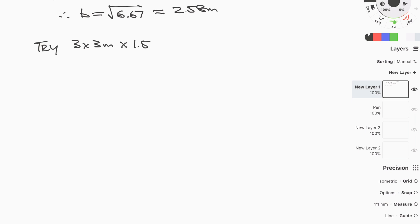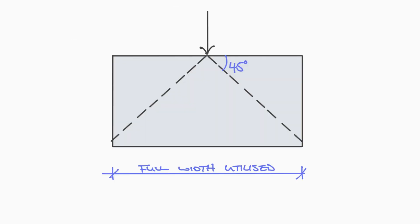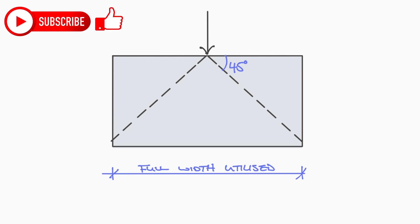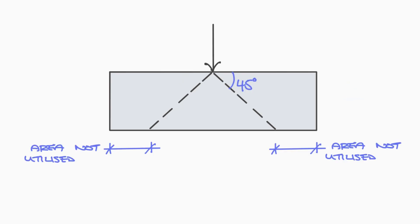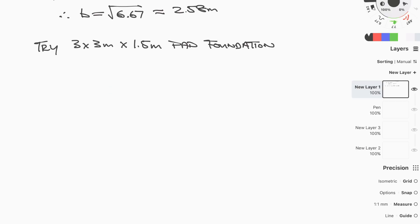We need to factor in the self-weight of the pad, so let's initially try 3 meters square. Since the bearing strata is 1.5 meters below ground, mass concrete pads are likely optimal. For a mass concrete pad to work, the depth must be sufficient so that drawing a 45-degree load spread from the column edge reaches the full width of the foundation. Using trigonometry, the required depth equals half the overhang on each side — effectively, if load is centered, half the foundation width minus half the column width.